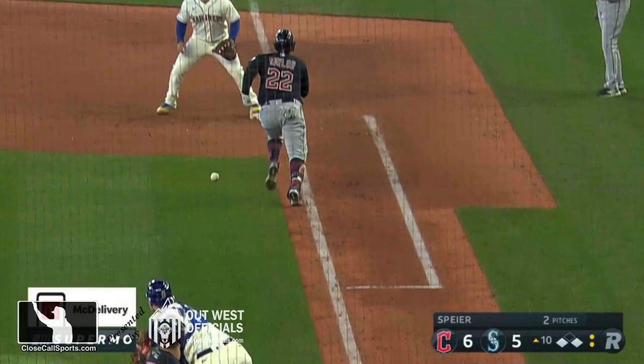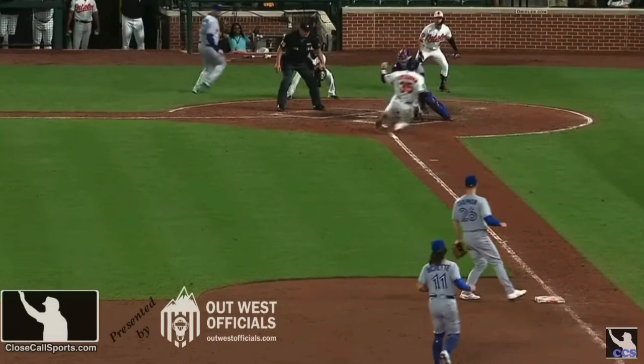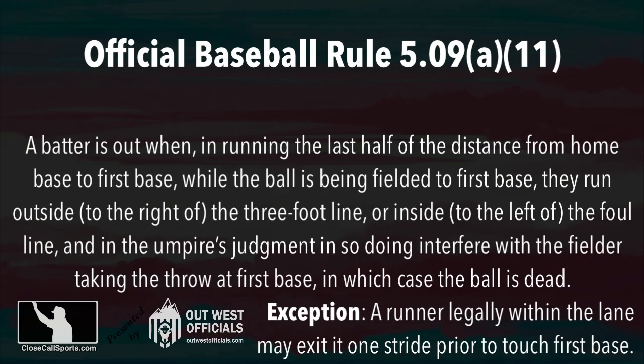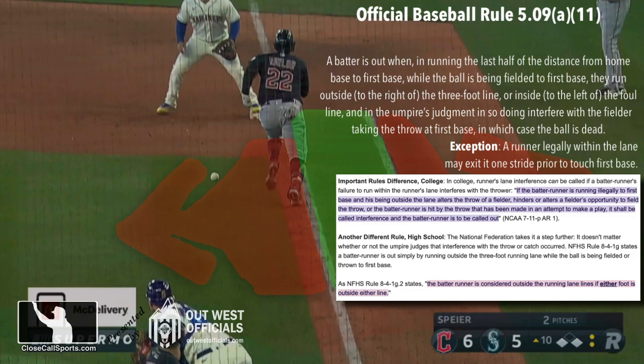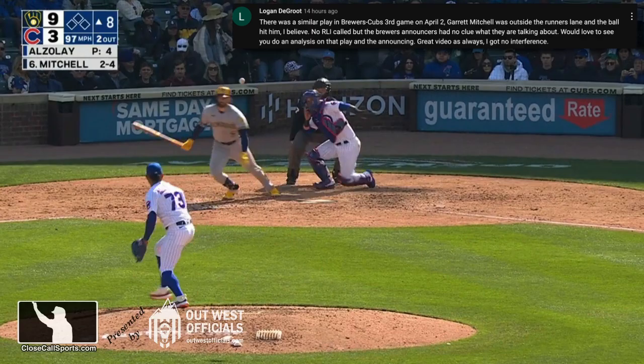Alright, on to the main event: runner's lane interference. Every year we seem to get a 'when it pours it rains' situation where one rule repeats over and over again in games. Last year it was the collision at home plate. This year, early in the season, we have RLI. You're familiar with rule 5-09 by now and you know the diagram of where a runner can and cannot run and what actually constitutes interference if they run in the red area. So you asked us to look at Chicago — let's go.